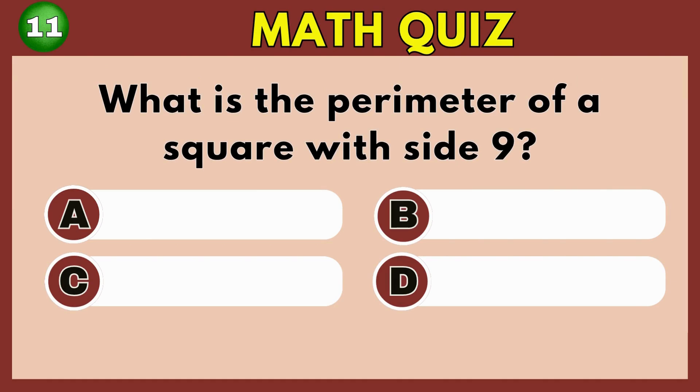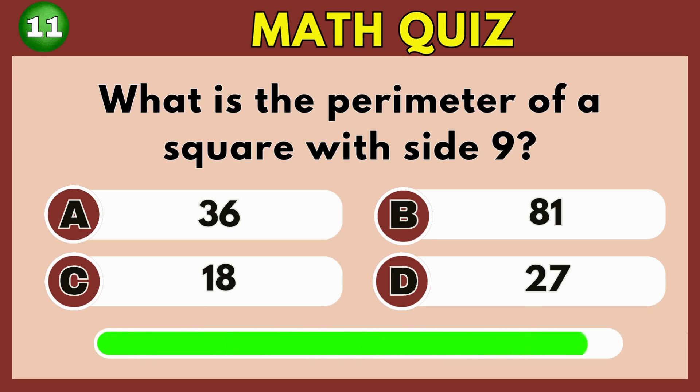What is the perimeter of a square whose side is 9? Option A. 36.